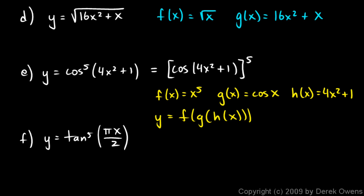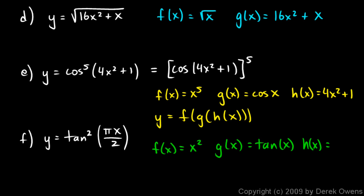The same thing happens in example f: tangent squared of (pi x over 2). My outer function f of x is x squared — the squaring. Then g of x is what is squared, which is tangent of x. And h of x is what's inside the tangent: pi x over 2. So y is f of g of h of x — three layers deep. Sometimes you have functions three layers deep or even more.